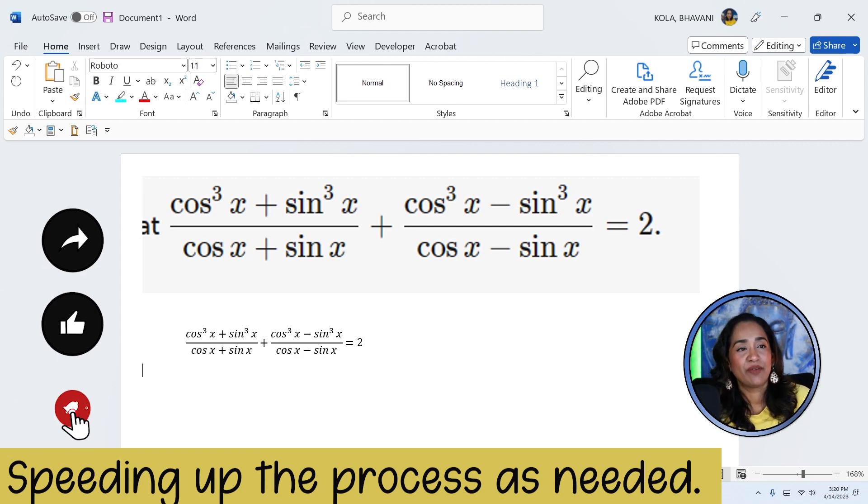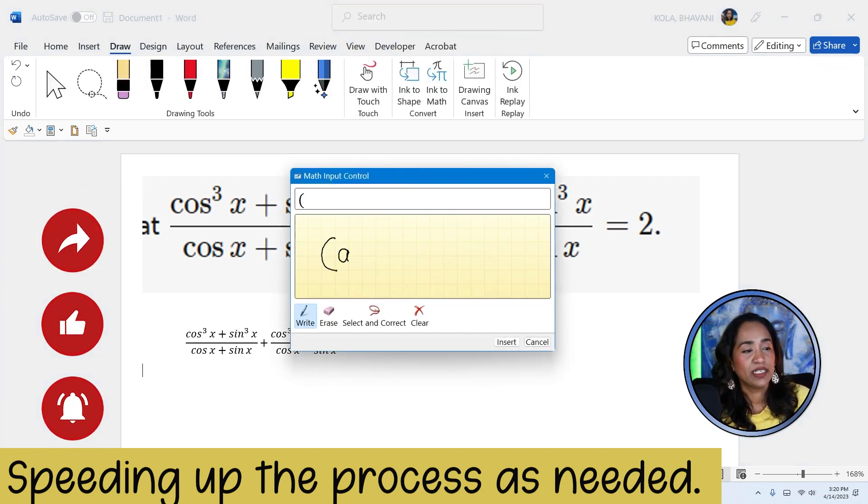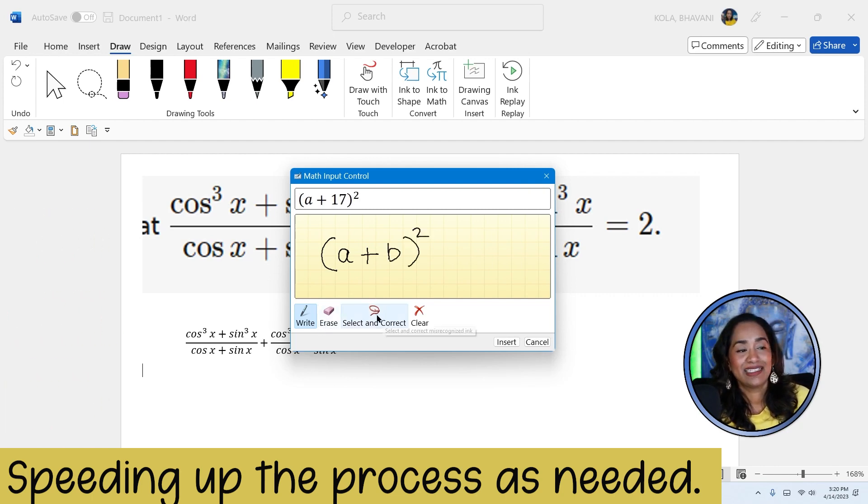Now let's go ahead and try something else. I'm going to go back, click on my draw tool, click on ink to math, parentheses, a plus b whole squared. As you can see, that turned out to be a 17. So I'm going to go back here, select it.